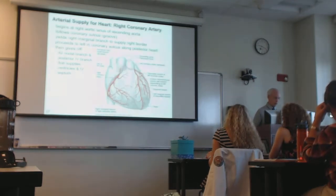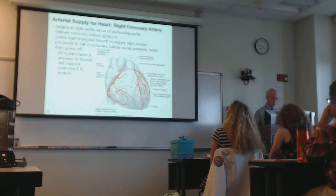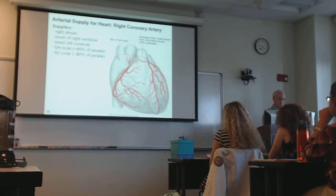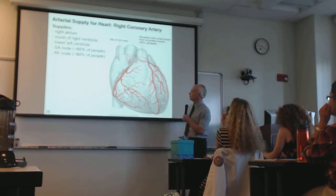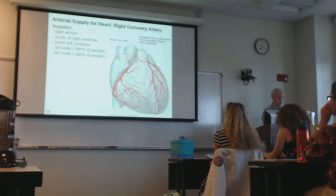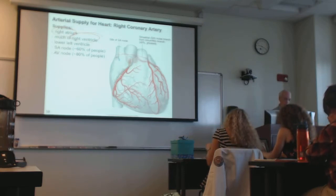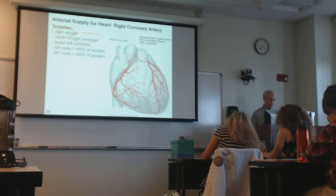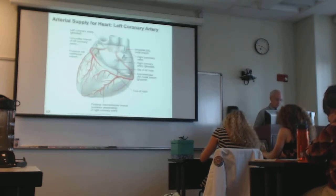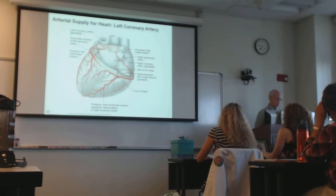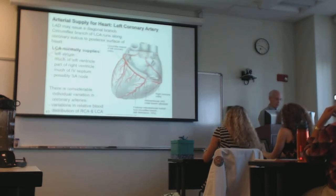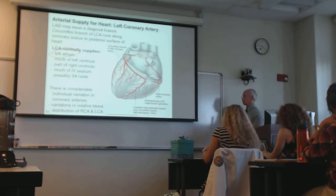In general terms — though the supply patterns are variable — the right coronary artery (RCA) supplies much of the right atrium, much of the right ventricle, and usually a portion of the lower left ventricle. The left coronary artery continues as the circumflex branch and normally supplies the left atrium, much of the left ventricle, and a much smaller portion of the right ventricle.